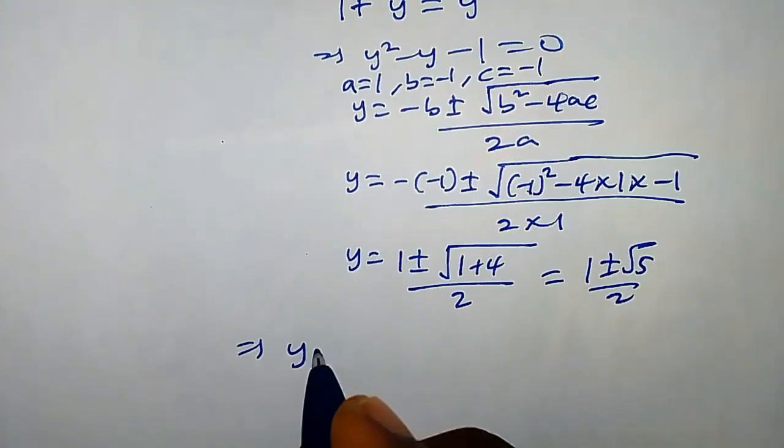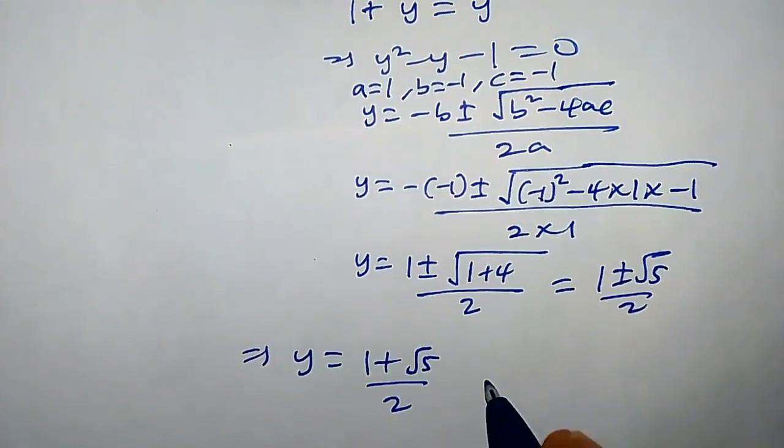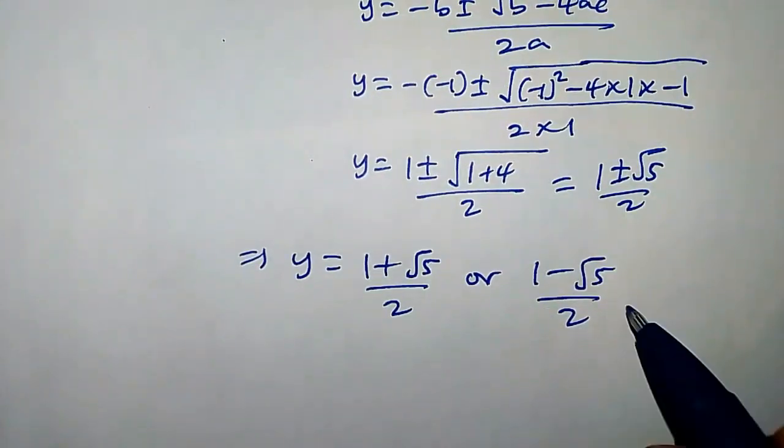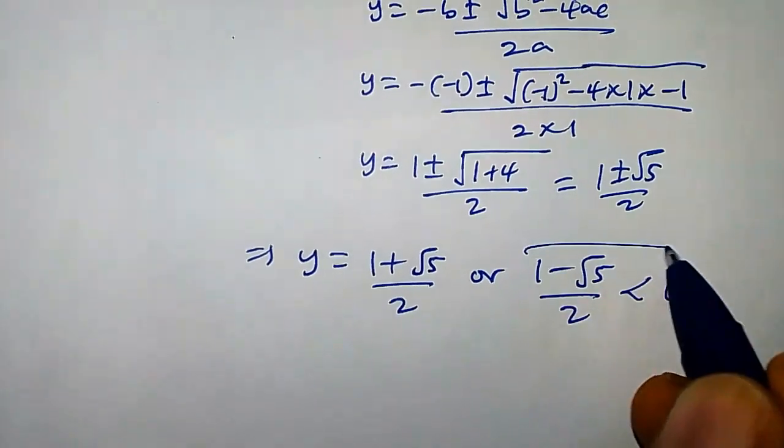This implies that y equals (1 plus √5)/2, or (1 minus √5)/2. Observe that this second solution is less than 0, so we are going to ignore it.